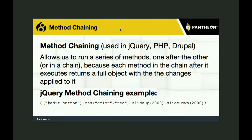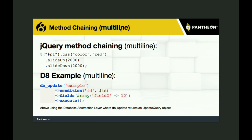Method chaining — you've seen it in jQuery where multiple commands are just chained together. It's called method chaining, and the reason why it works is because every one of those commands — CSS, slide up, or slide down — actually returns the entire edit button object again. That's why every method in the chain can work successfully on the object, because it keeps getting returned by every method in that chain. You see multiline method chaining throughout Drupal 7 and 8, for example DB update executing condition, which returns the object, then fields, which returns the object, and then finally execute.